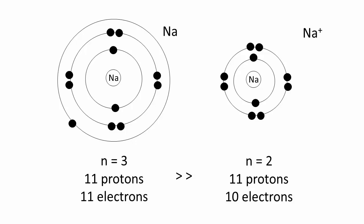With one more proton in the nucleus, the sodium cation even becomes smaller than the neon atom with whom it shares the same electronic configuration.